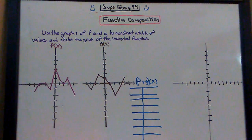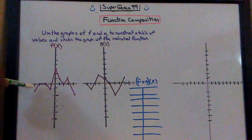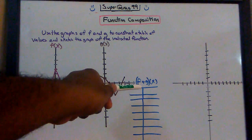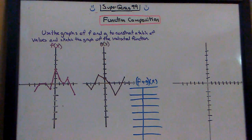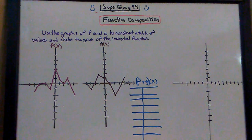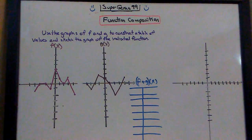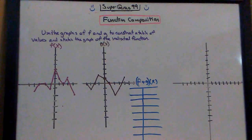First of all, we're going to do f plus g. We're going to take a point, look at the f value of x and then the g value of x at a certain point, and we are going to construct the addition — a summation of two functions. Let's do some examples and then you'll probably get the hang of it and be able to do your own.